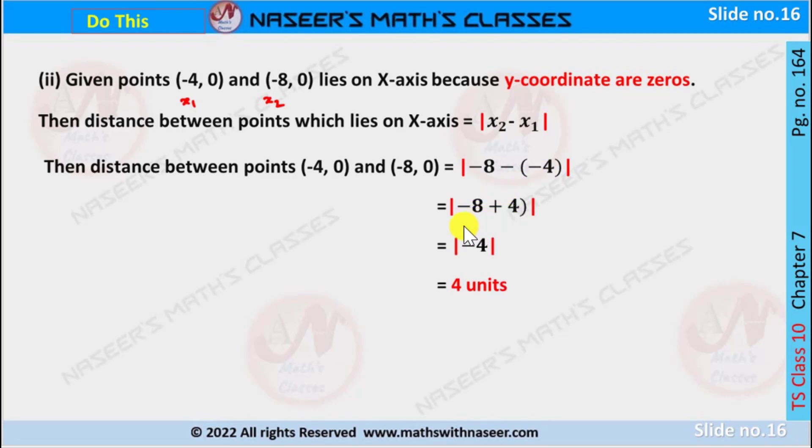After simplification we get -4. Mod -4 can be written as 4 because mod of negative number becomes positive 4.